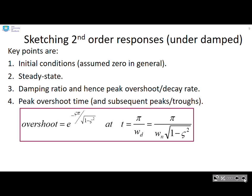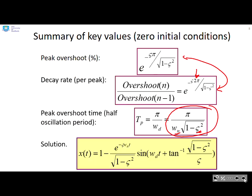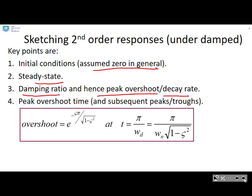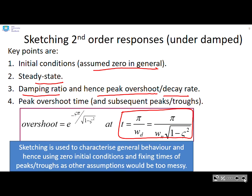Sketching second order responses. What are the key points if you want to do a sketch? We're going to assume zero initial conditions. Next we find the steady state, then we calculate the damping ratio and from the damping ratio we can get the peak overshoot or decay rate. Then we're going to get the peak overshoot time, which tells you where the peaks and troughs occur. Now key point: sketching is used to characterise the general behaviour, and we're using zero initial conditions and fixing the times of the peaks and troughs as any other assumptions would be too messy.